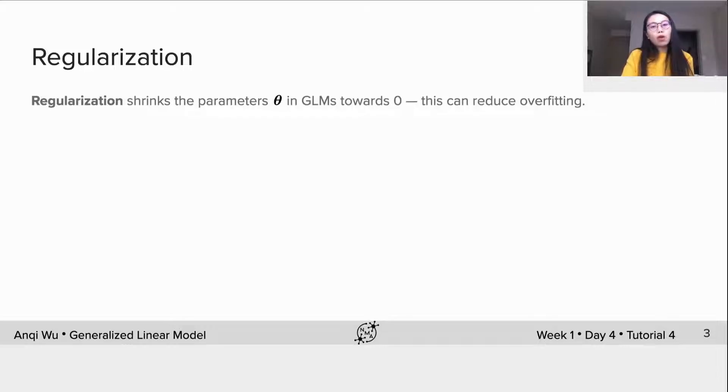To overcome overfitting issue, people use regularization. It shrinks the parameter theta in GLMs towards zero, thus it can reduce overfitting.